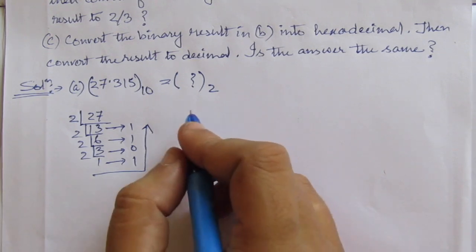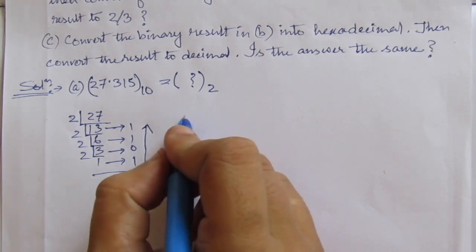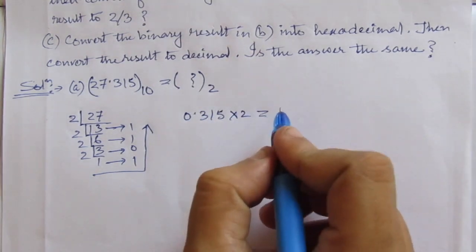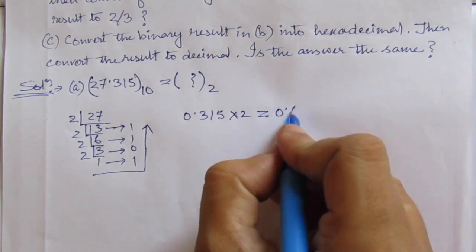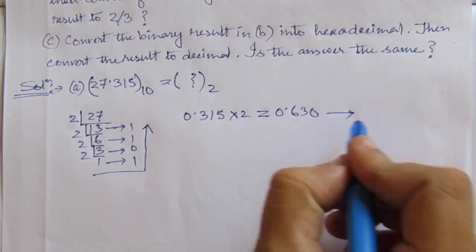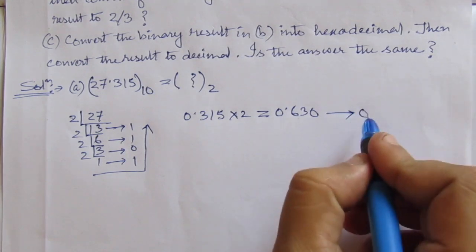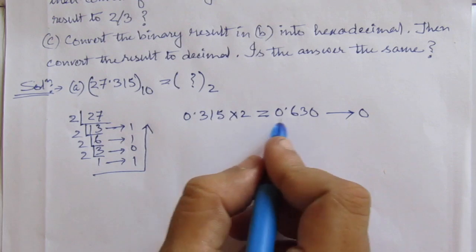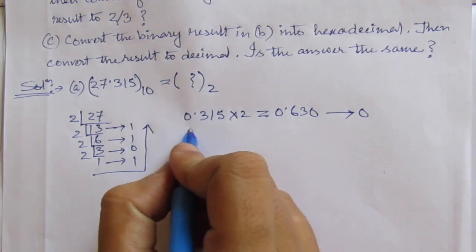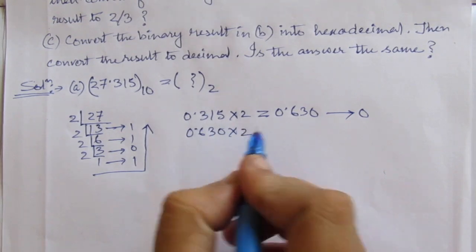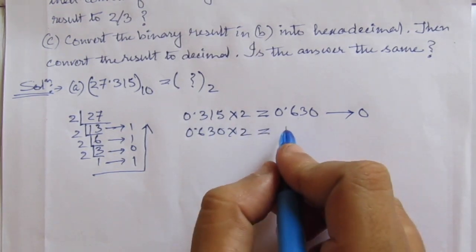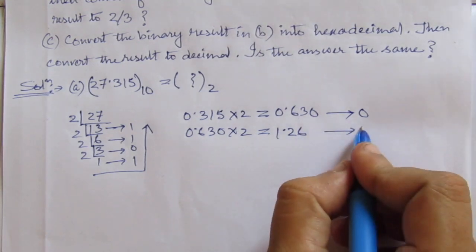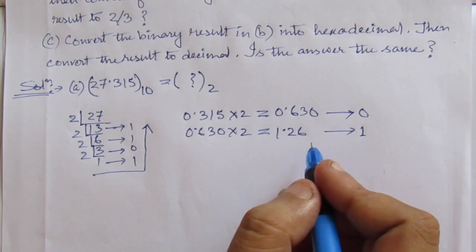We multiply 0.315 by 2, which gives 0.630, and the coefficient here is 0. Next, we take 0.630 and multiply by 2, giving 1.26, and the coefficient here is 1. We continue collecting the integer coefficients at each step.